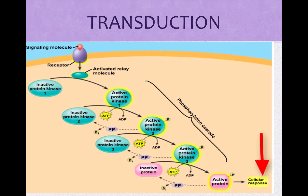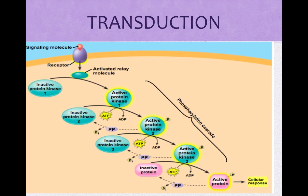Protein phosphorylation plays a major role. This is when a protein is activated by adding a phosphate group. Protein kinase is an enzyme that transfers a phosphate from ATP to a protein, which activates it. Most phosphorylation occurs at amino acids; the two most common are threonine or serine. Protein kinases relay the signal down a cascade. Protein phosphatases remove phosphate from proteins, turning off signal transduction pathways.